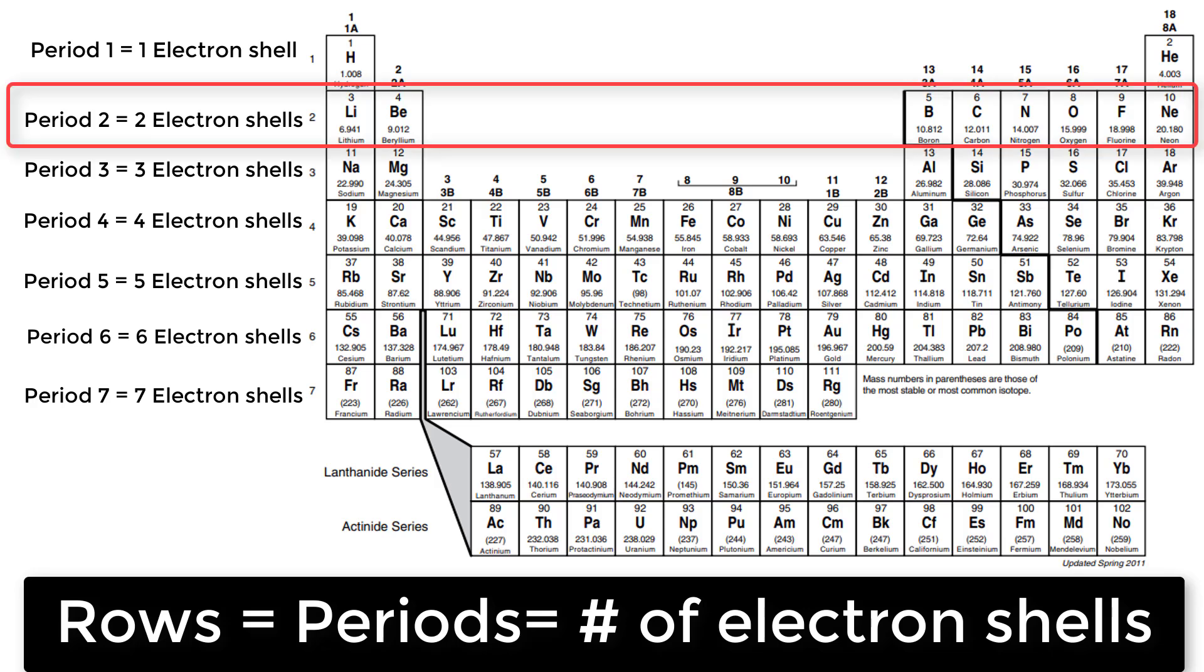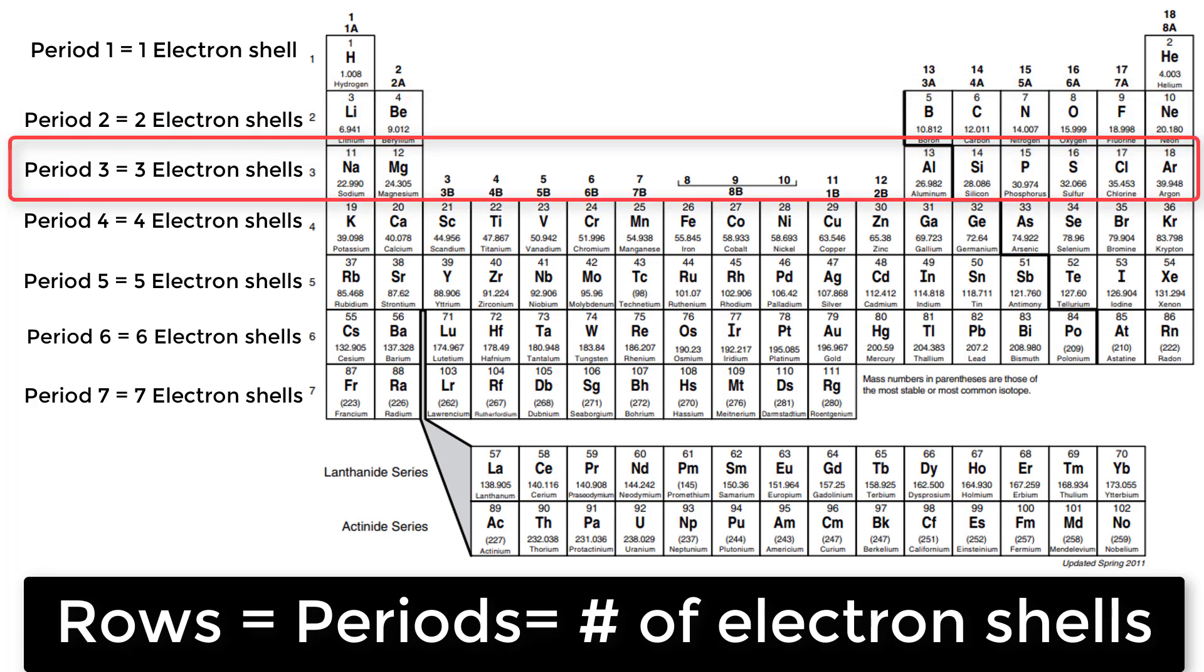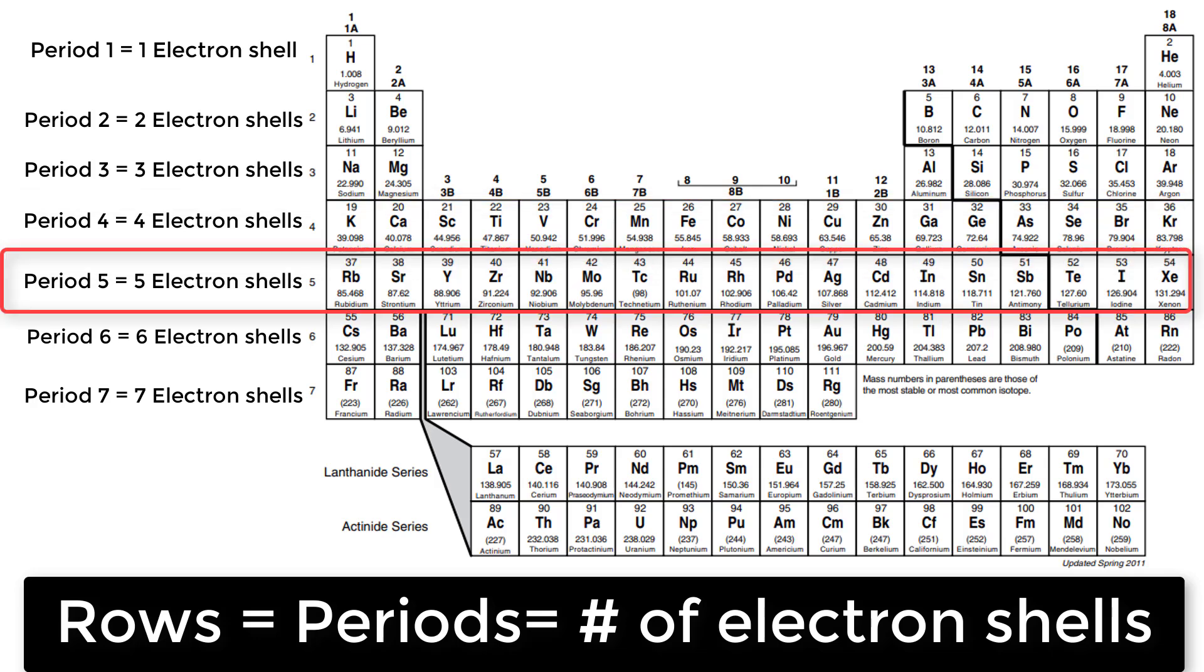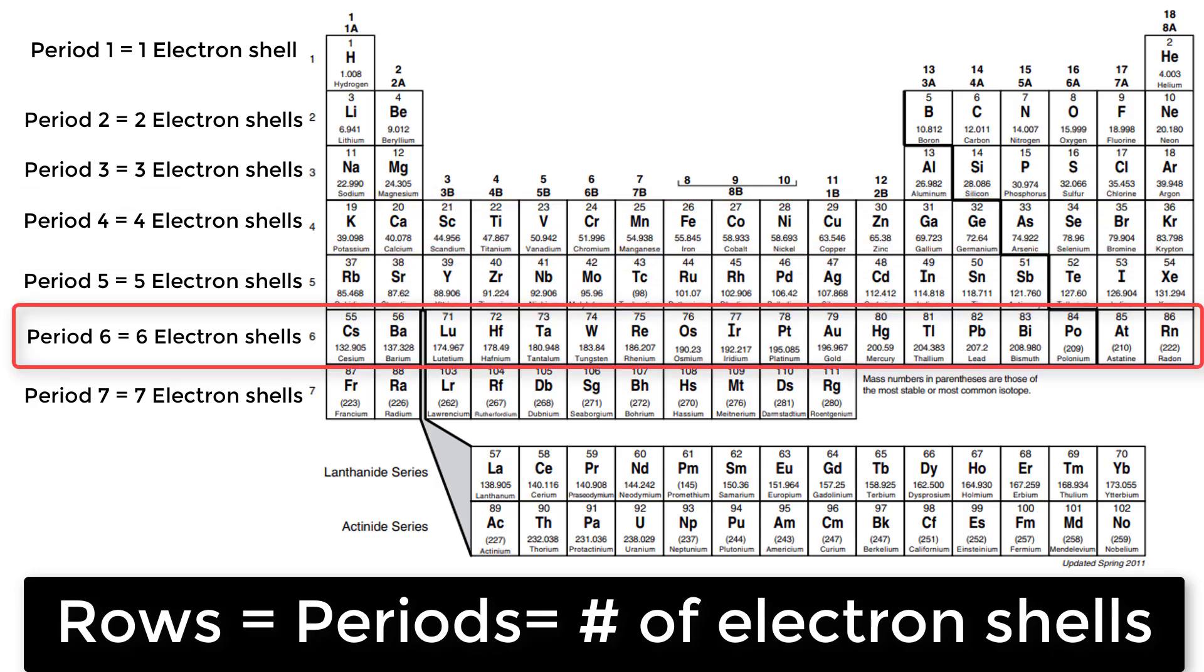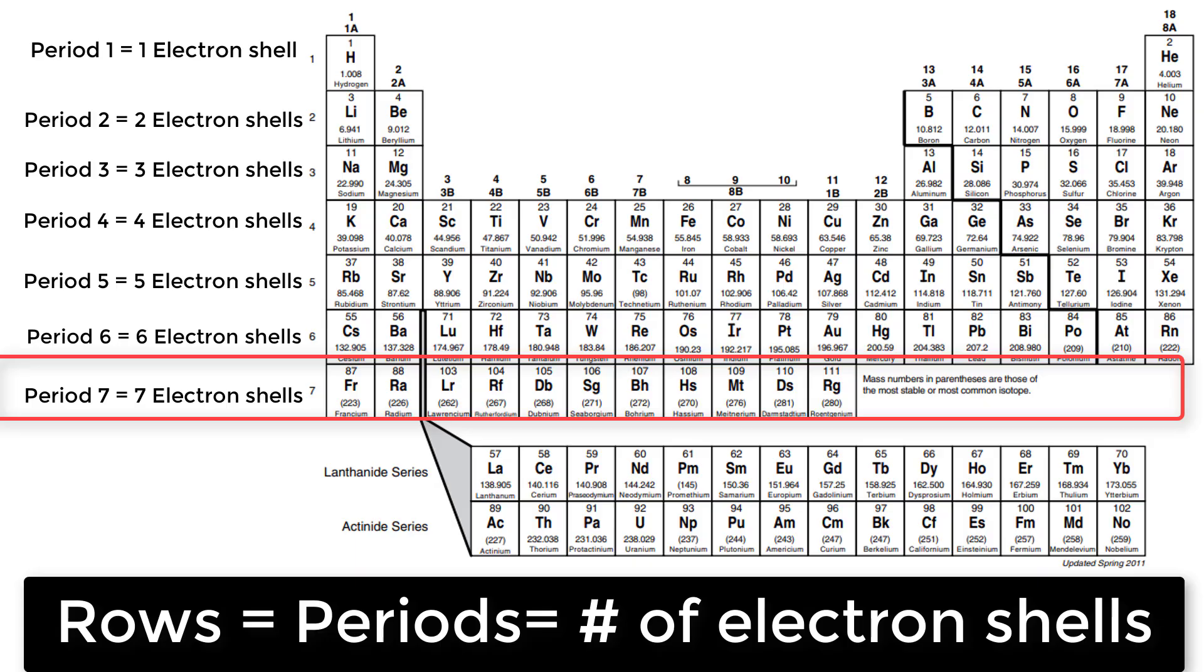All of the elements in the second row, the second period, have two electron shells for their electrons. As you move down the table, every row adds a shell. At this time, there's a max of seven shells.